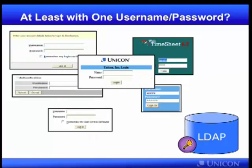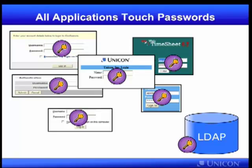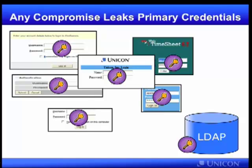You can improve this a bit, perhaps, by having one store for credentials — one authoritative username and password for each of the users on your campus. In that case, all the applications, each presenting their own login form, gets to touch the end user's passwords. And if you've used LDAP or some other store as your central store of passwords, you get some user convenience in only having one username and password for all of these. But all these applications are touching the user's password, which means that any compromise among any of these applications is going to leak primary credentials.